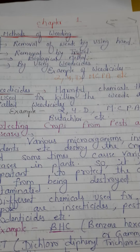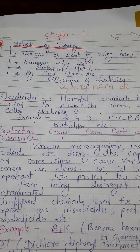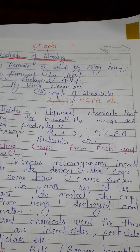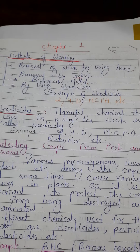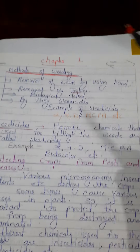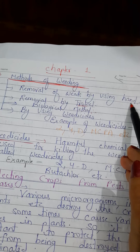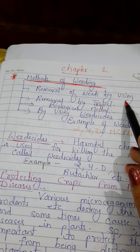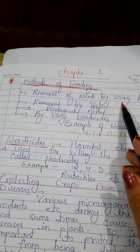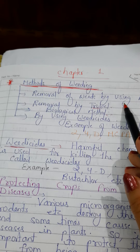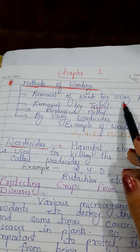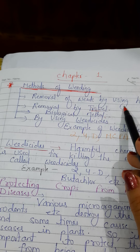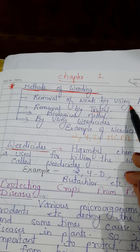What are the different methods of weeding? First is removal of weeds by using hands. Farmers remove weeds by hand, but this method cannot be used on a larger scale — in a large field it is not possible for farmers to remove weeds by hand.